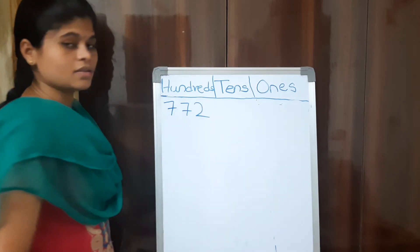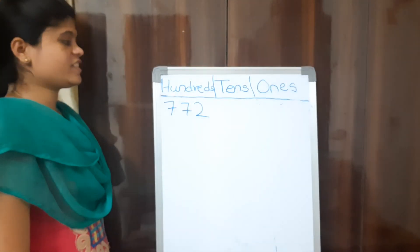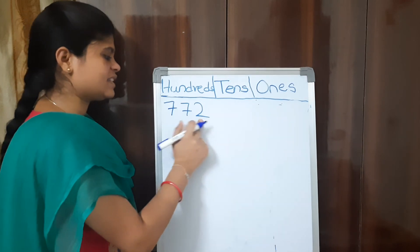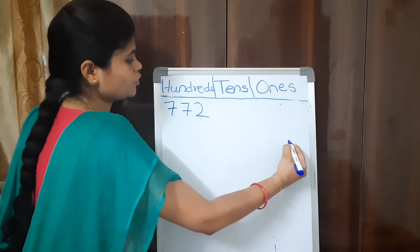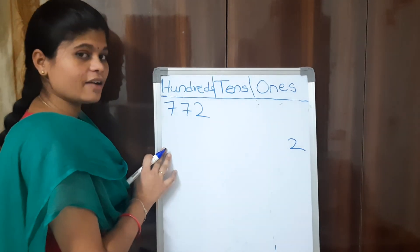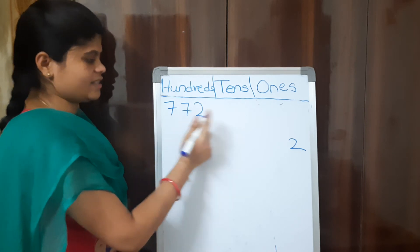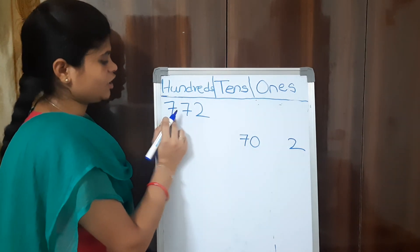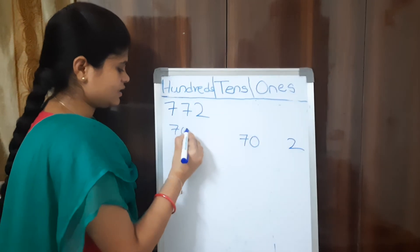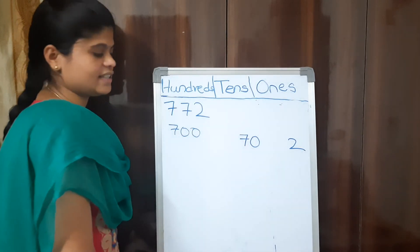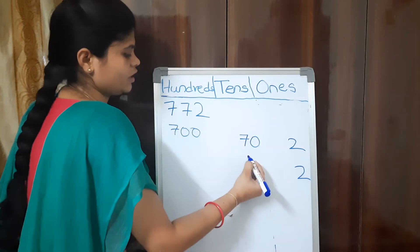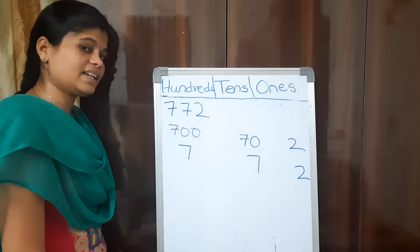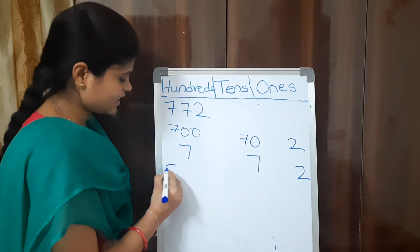Next example: 772. How to write 772 in place values? We have 2 ones because 2 is in the 1s place. We have 7 tens (which is 70) because 7 is in the 10s place. We have 7 hundreds (which is 700). How do we represent 772 in digits? 2 in 1s place, 7 in 10s place, 7 in 100s place. What is the number name of 772?